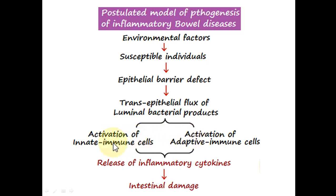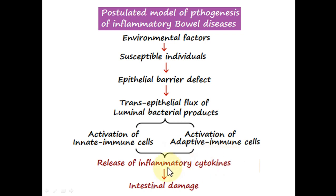Both the innate immune system, which a person is born with, and the adaptive immune system, which develops after exposure to microorganisms and pathogens, are activated. The activated immune cells then release inflammatory mediators or cytokines — for example, tumor necrosis factor and interferon gamma released by activated macrophages, various cytokines released by helper T cells, and proteases and lysosomes released by neutrophils. These inflammatory cytokines damage the intestinal epithelium, resulting in a chronic state of inflammatory disorder.